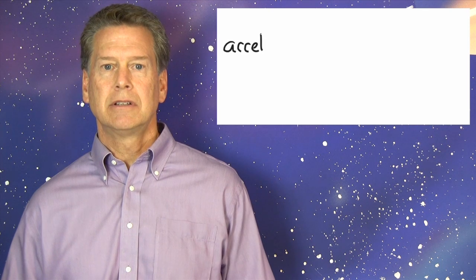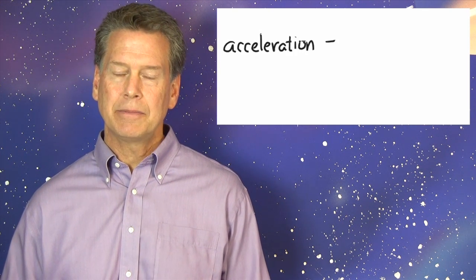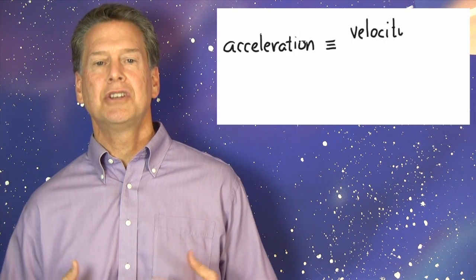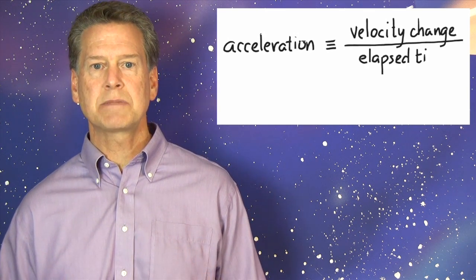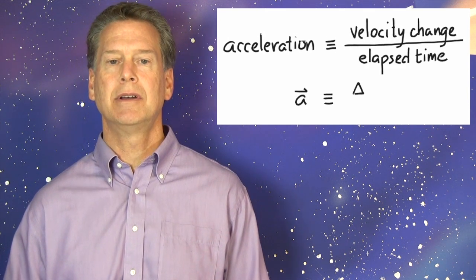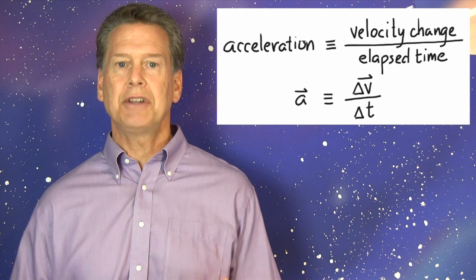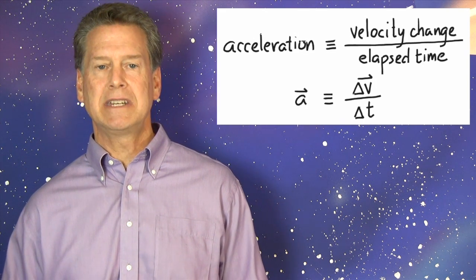Here comes the definition of acceleration. Acceleration, little a vector, is defined as change in velocity divided by the corresponding elapsed time. That is, it's delta v vector divided by delta t.